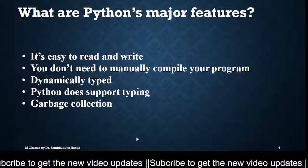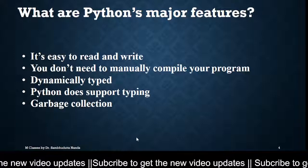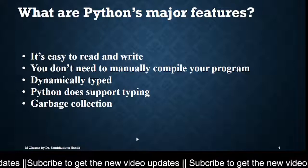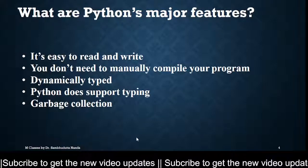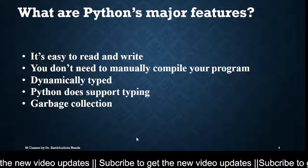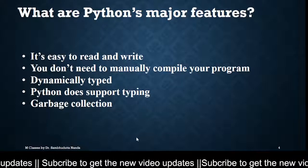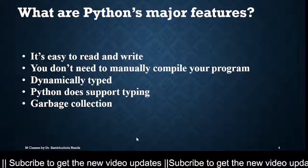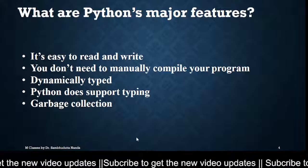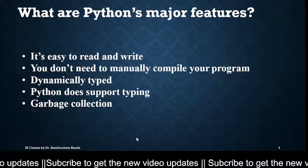Next is dynamically typed. What does dynamically typed mean? Basically, in other languages like C, C++, and Java, if you want to declare an integer variable, you need to declare its type — you write int or integer, then the variable name, then the value. But in Python, you don't have to do that. It automatically detects what type the input is — whether it's a character, string, integer, boolean, or floating number. So it can detect it automatically; that's why it is called dynamically typed.